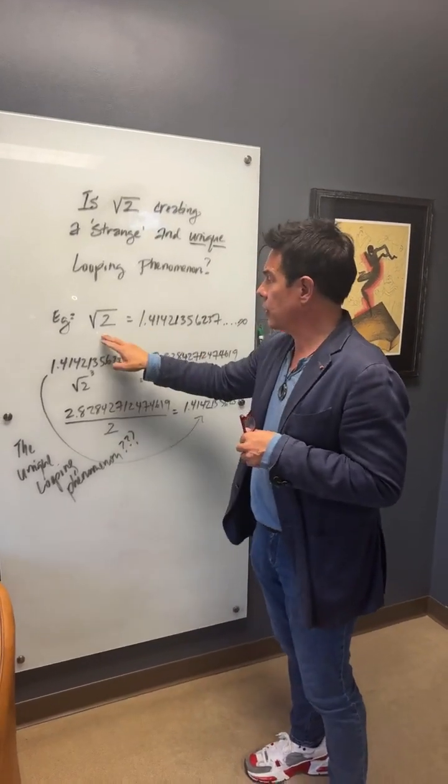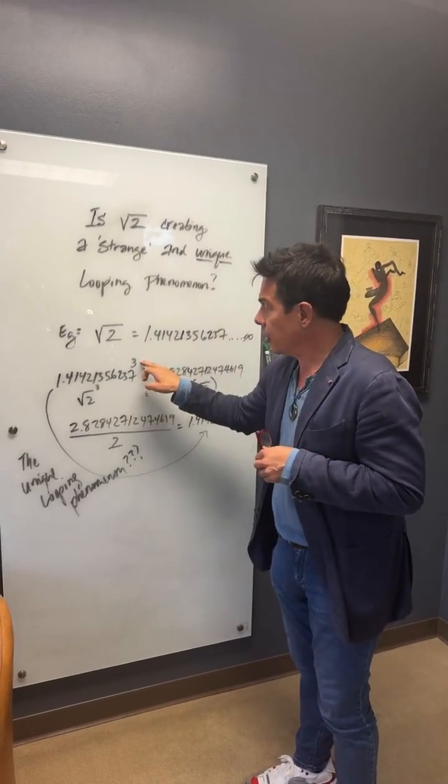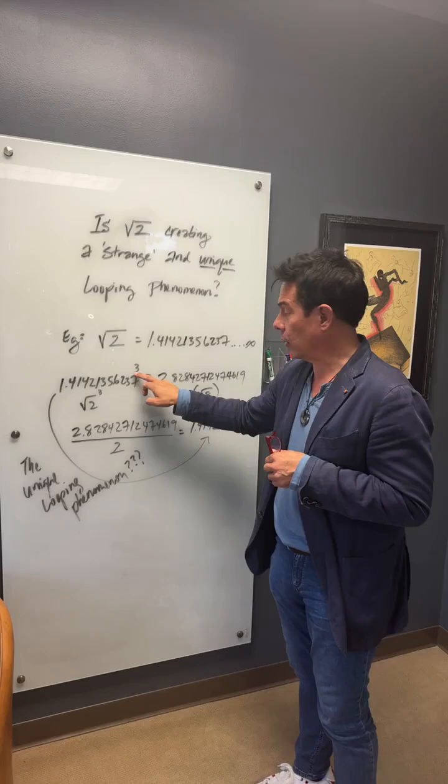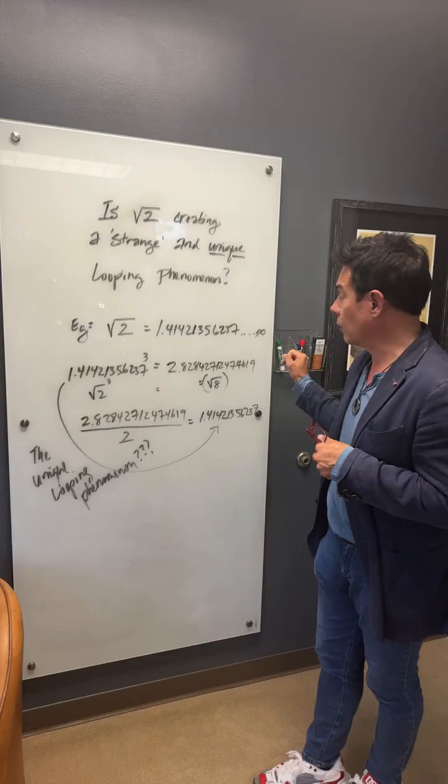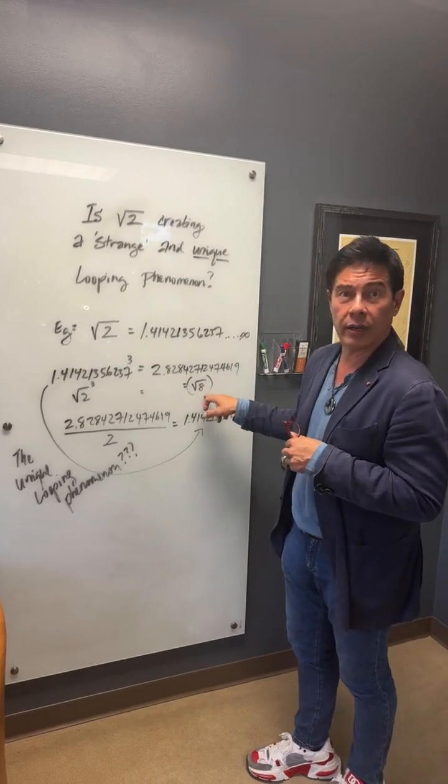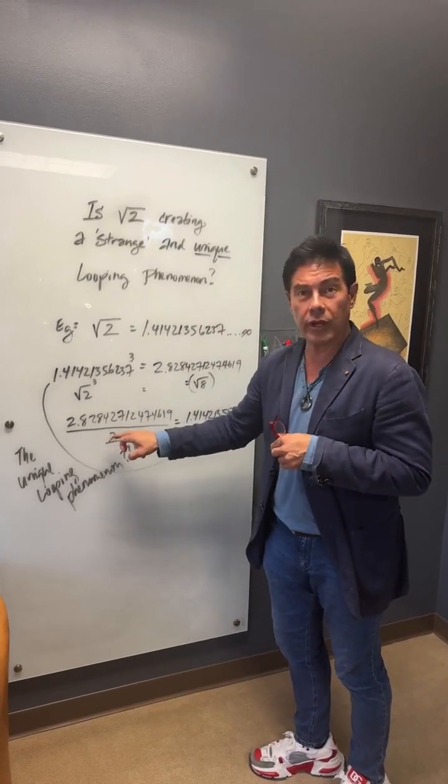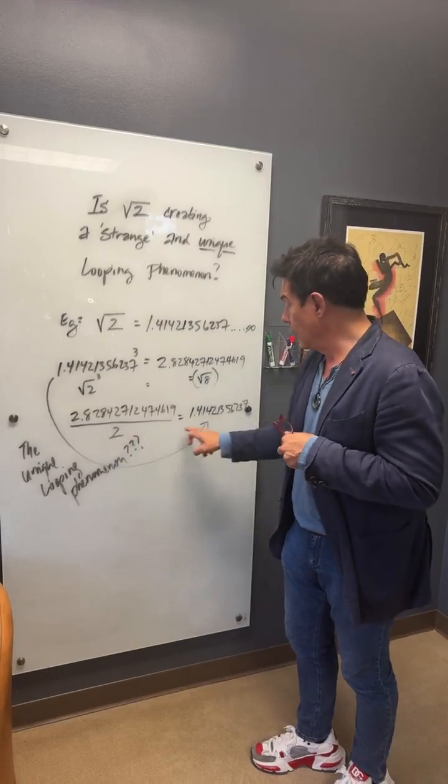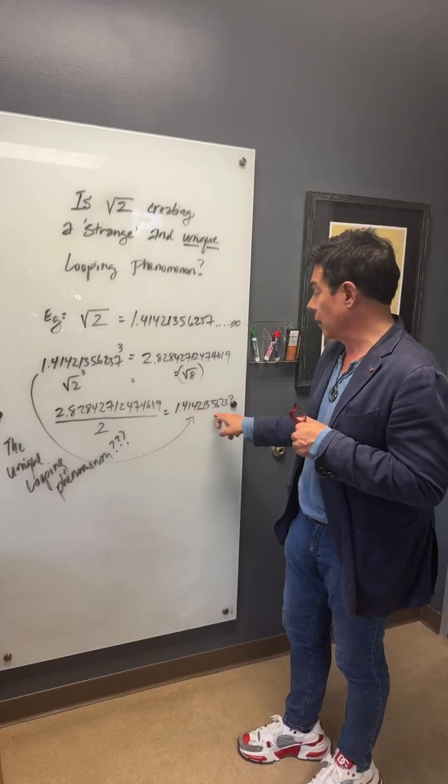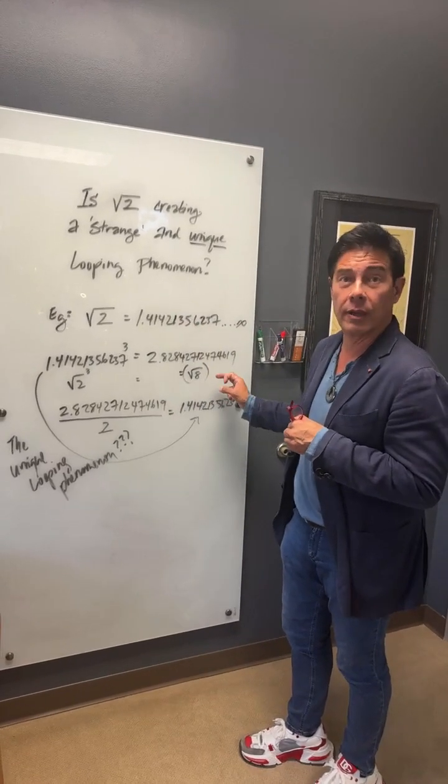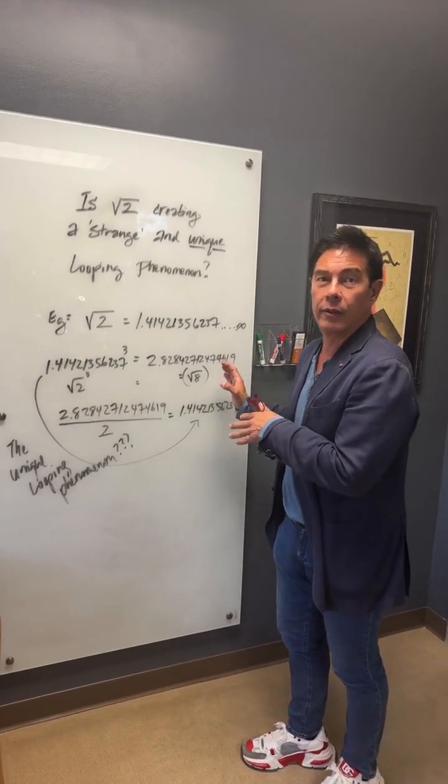So what was asserted is that the square root of two, if it's 1.41421356237, is then cubed, taken to the third power, it equals 2.82842712474619, which is actually equal to the square root of eight as well. So this then, if we divide it by two, the original two that we started with from the square root function, comes out to the original value of 1.41421356237. So this looks like something is something totally unique potentially, right? But let's dig a little bit deeper into this to understand exactly what's going on here.